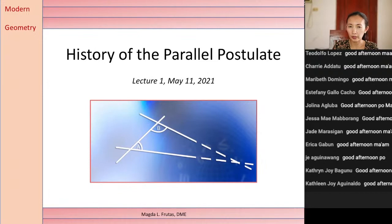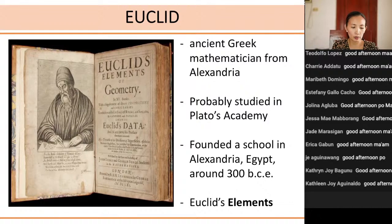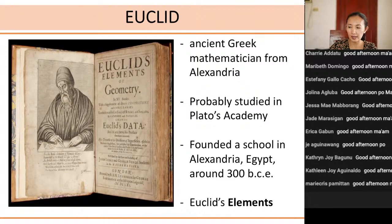Some of the info we know about Euclid — we are not even very sure about the picture, if this is really Euclid, because who would know. So once more: an ancient Greek mathematician from Alexandria. He studied in Plato's Academy but later founded his own school in Alexandria, Egypt. His well-known book is the Elements.